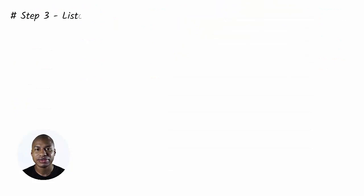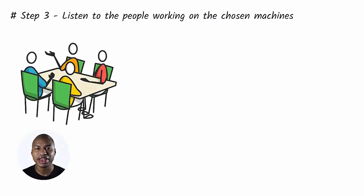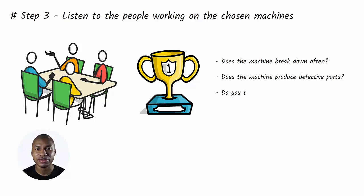Step 3. Listen to the people working on the chosen machines. Arrange interviews with the people who work on the chosen machines daily. Empathize with them and tell them that you want to take the machine to peak performance. Ask simple questions such as Does the machine break down often? Does the machine produce defective parts? Do you take a long time to do the setups? What bores you about working on this machine? Record responses in an orderly manner.